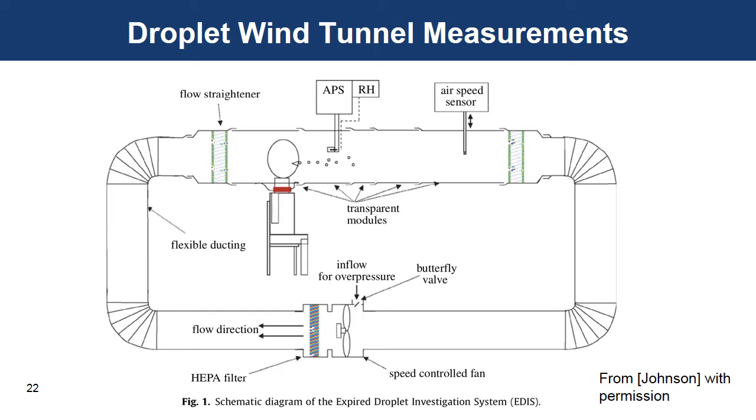Okay, there are a couple of setups for measuring the emission of particles from people. One of them is this wind tunnel in Australia that includes an APS, an aerodynamic particle sizer, with a probe to sample the particles from different parts of the wind tunnel flow. And then the ellipse to the left of the probe is the volunteer's head. So the paper points out that the volunteers for this work have to be not claustrophobic.